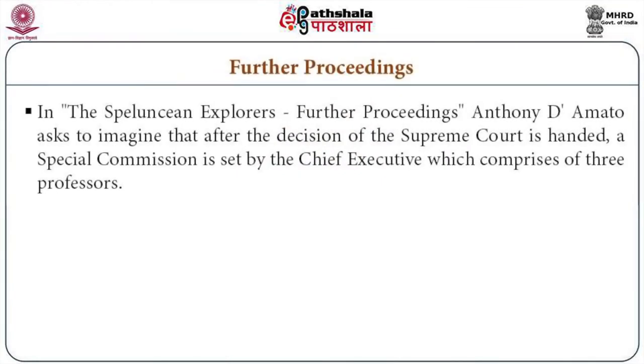As mentioned, two decide for acquittal, two decide for conviction, one recuses — it's a tie — and therefore according to the way the law works, the original conviction is upheld and the people are sentenced to death. In something referred to as further proceedings by the legal scholar Anthony D'Amato, we are asked to imagine that after this decision is brought out by the Supreme Court, a special commission is set up by the president — the chief executive — in order to get three more opinions about what should be done, so that the president can decide whether to pardon these four who are accused and due to be hanged. These three judgments represent three further kinds of legal theorization of this problem, offered by legal scholars and professors rather than judges.